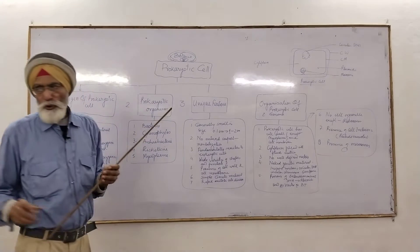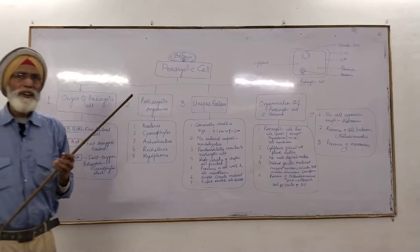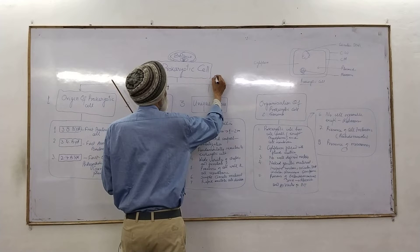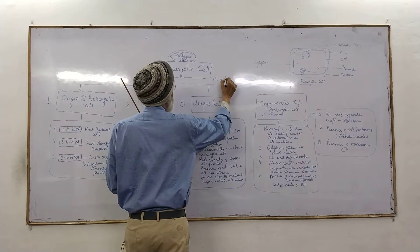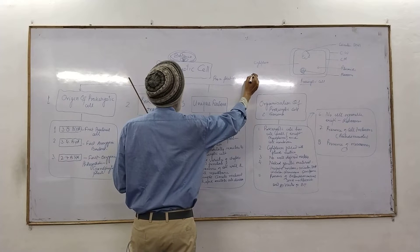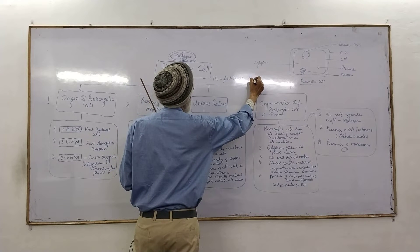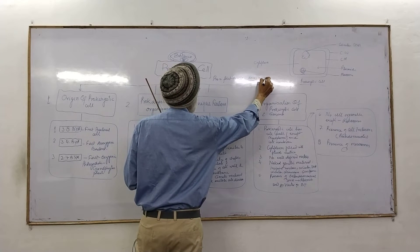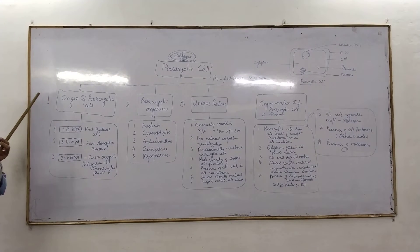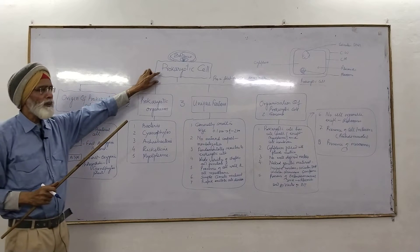Prokaryotic cell is the most primitive type of a cell. Pro means primitive, the first form. Karyo means nucleus. Beginning of this cell, having just a specific boundary and a little genetic material, so called prokaryotic cell.